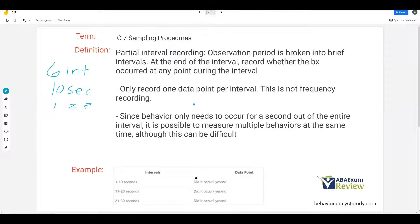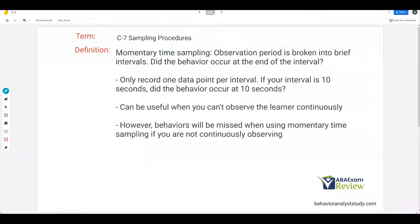You're only recording one data point per interval. Remember, this is not frequency recording. Since behavior only needs to occur for a second out of the entire interval, it is possible to measure multiple behaviors at the same time, although this can be difficult. If you see our example, intervals one to 10 seconds, and we're simply asking, did it occur? Yes or no? We're not worried about length of time. We're not worried about how many times. We're simply asking between those one to 10 seconds, did the behavior occur? Between those 11 to 20 seconds, did the behavior occur?